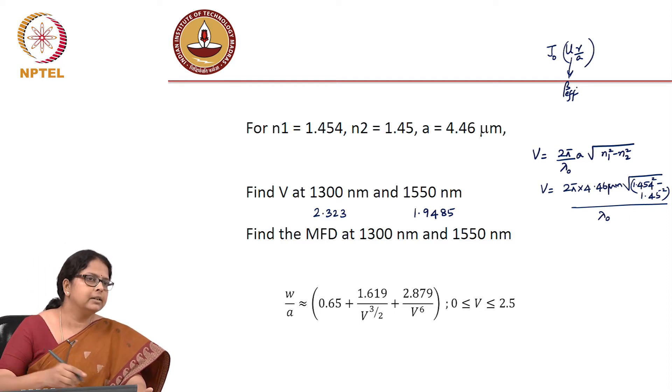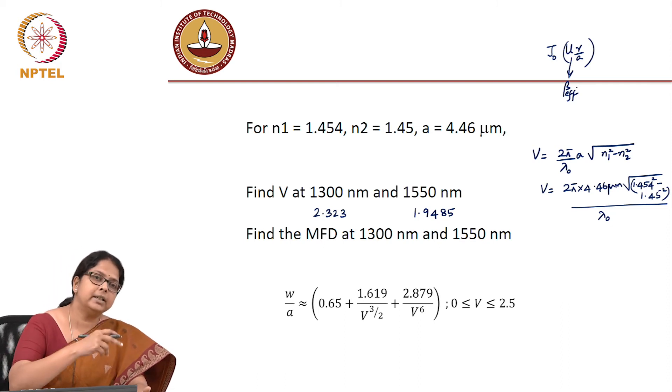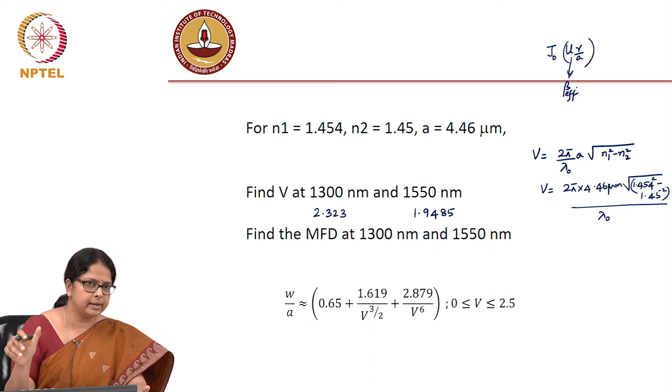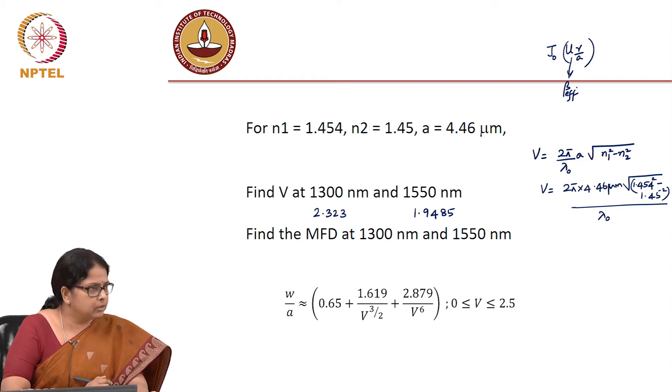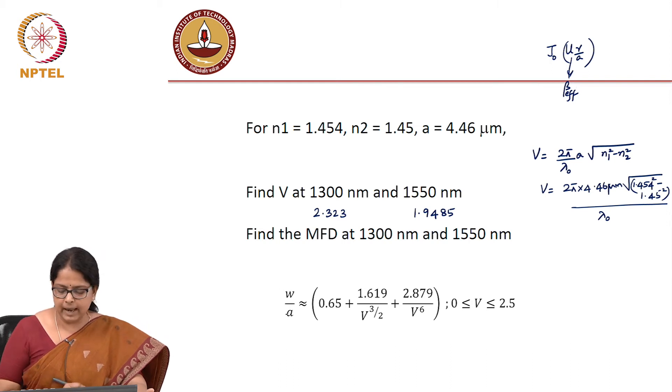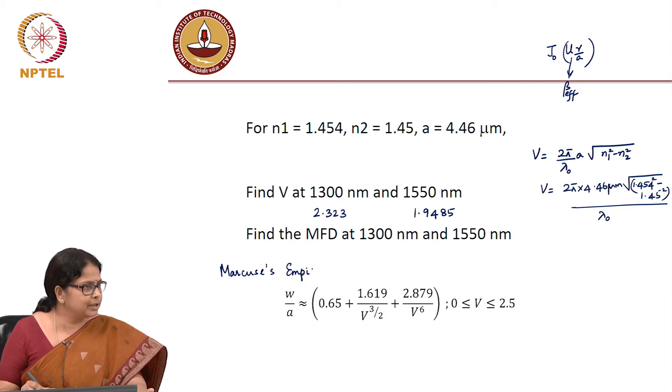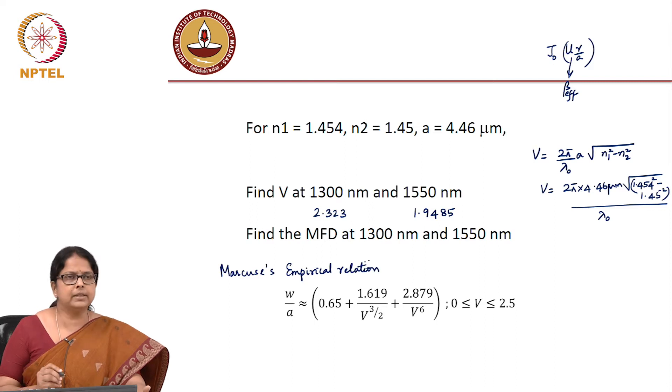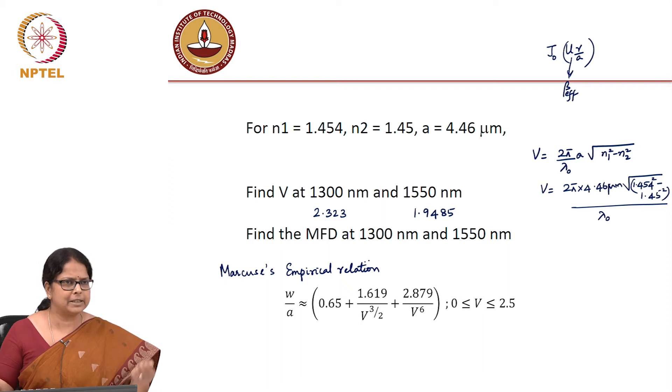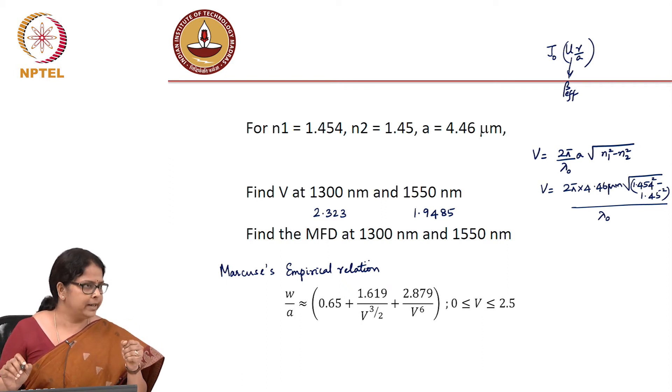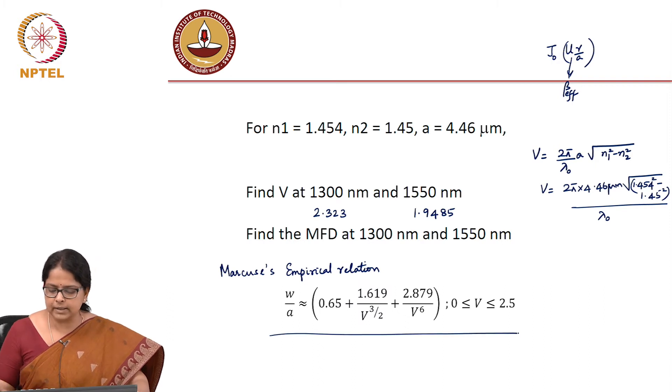If you keep plotting that Gaussian and you keep recording, you keep plotting the J naught, the Bessel function, the zeroth order Bessel function, approximate it as Gaussian every time, you do a Gaussian fit every time and you find out what is the 1/e width of that Gaussian. It turns out that this W by A is given by this empirical relation and this empirical relation is Marcuse's empirical relation.